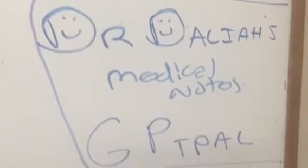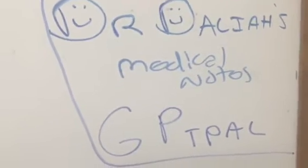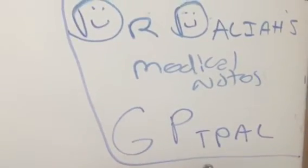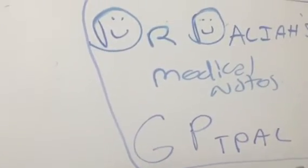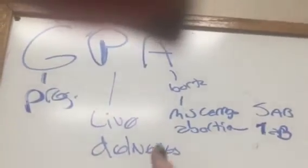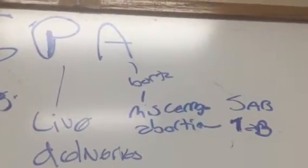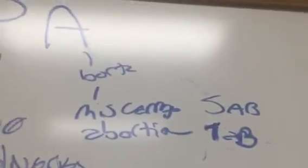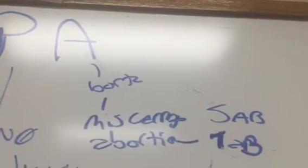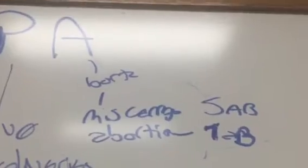Dr. Dolly here. I'm going to quickly review GPTPAL. I know there's a lot of controversy over how to divide up the para into the term, preterm, aborta, and living. When I went to school it was GPA: G was for gravida, how many pregnancies; P was how many live births or live deliveries; and A was aborta or abortus, divided into miscarriage and therapeutic abortion. If somebody lost their child by accident it was a spontaneous abortion; if the pregnancy was removed purposely it was a therapeutic abortion. That's how we learned GPA.